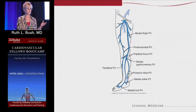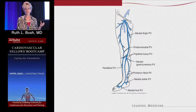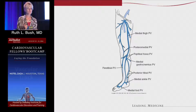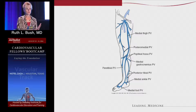For example, somebody comes in with a classic distribution of a cluster of varicosities on their calf — I know that's in the distribution of the great saphenous vein. If they're on the lateral aspect of the calf, that's more in the distribution of the small saphenous vein. You will learn to recognize these patterns.